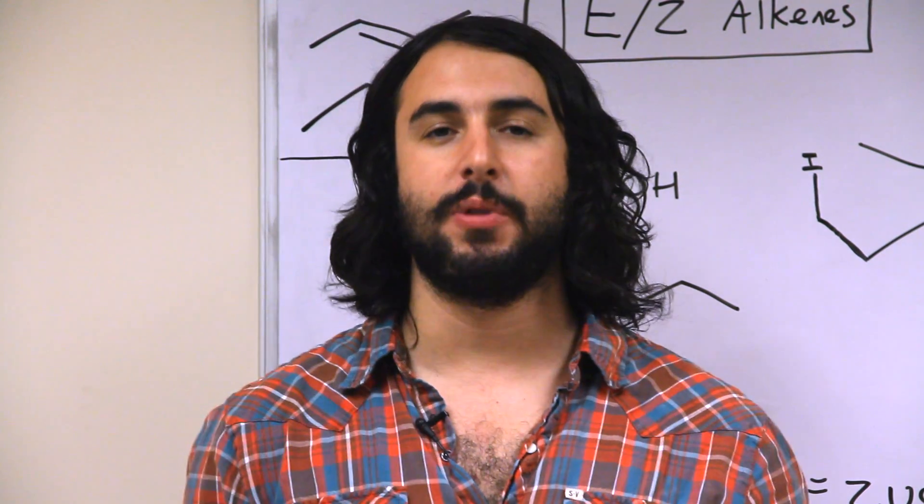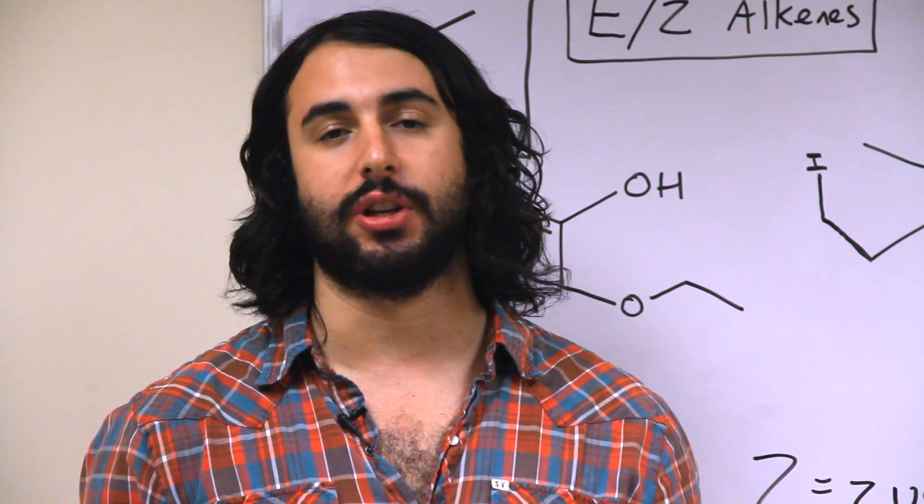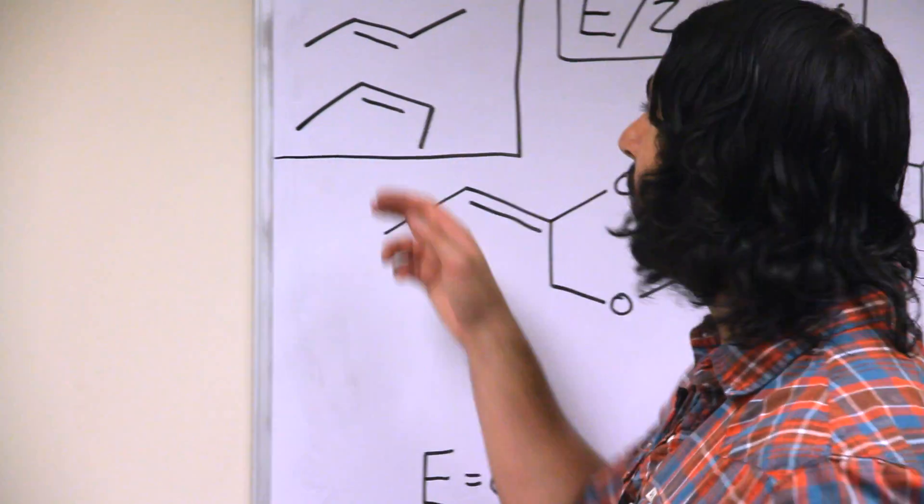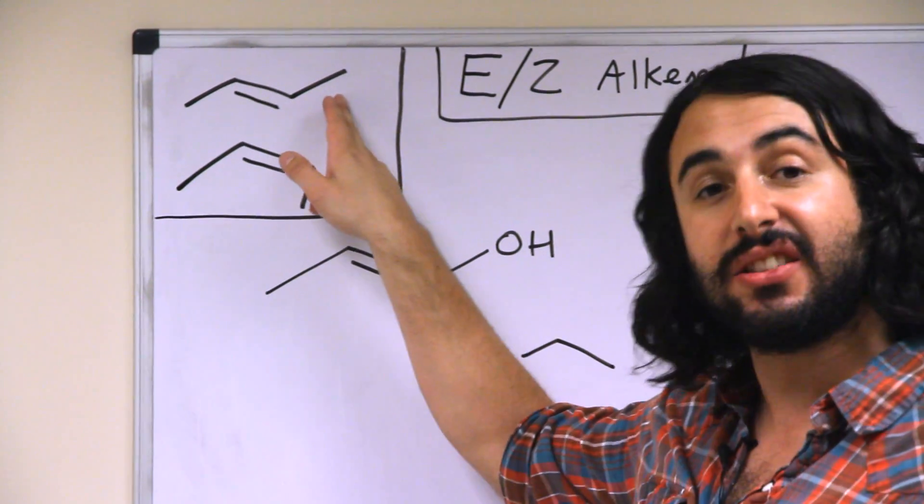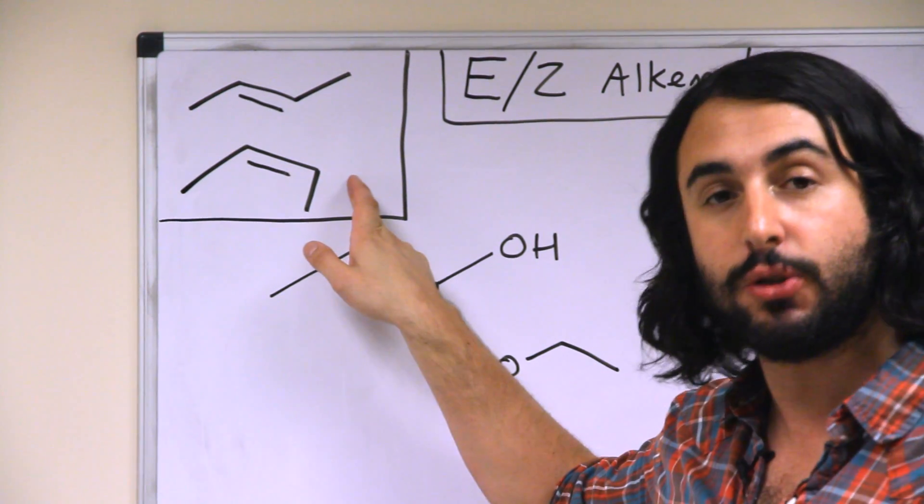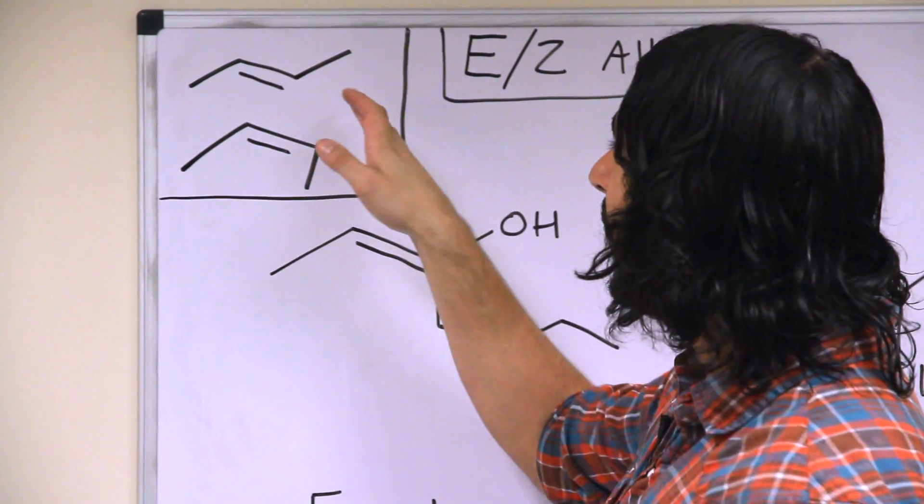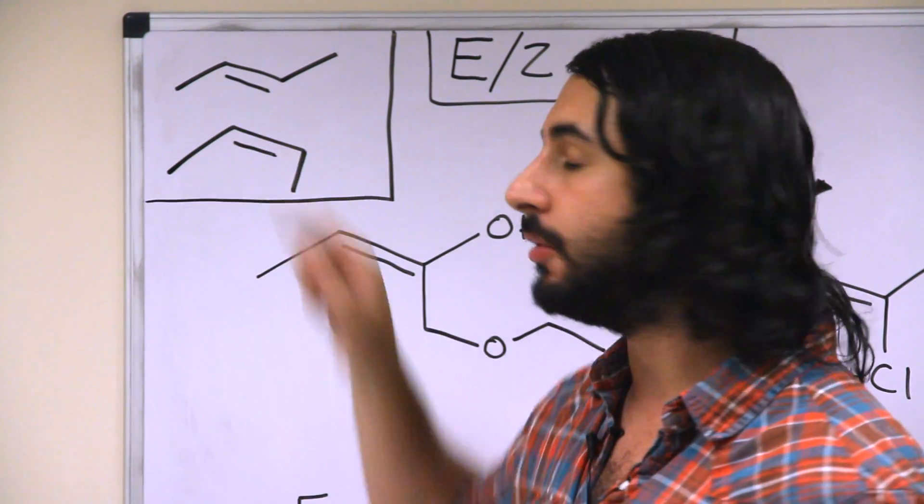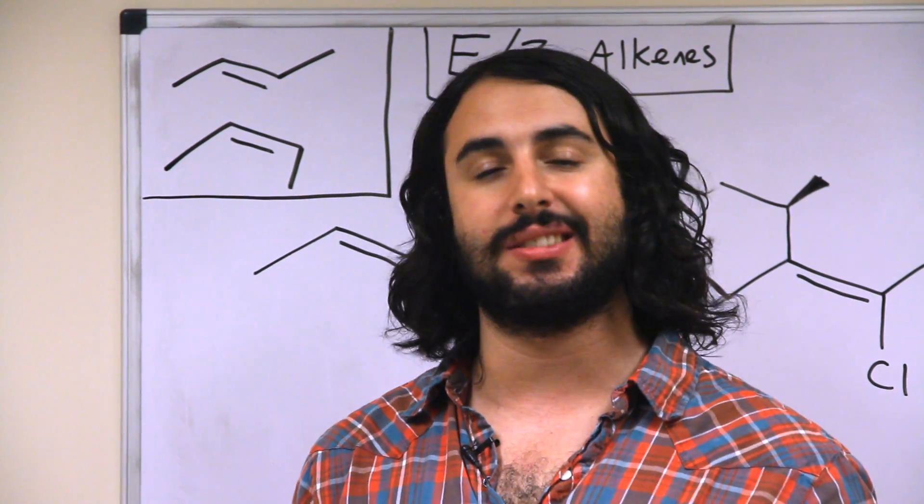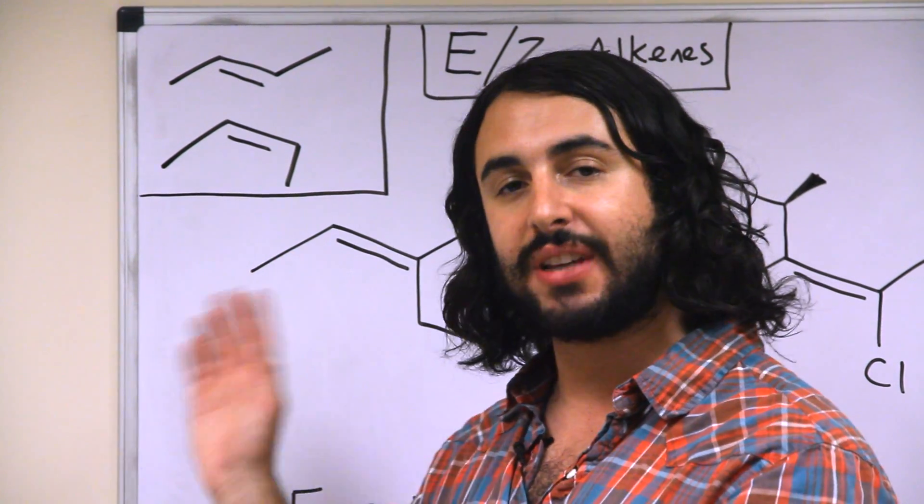So we're probably familiar with cis and trans terminology as it relates to alkenes. For example, we would know that this is a trans-2-butene and this is cis-2-butene. Now we're able to use this terminology because these are only disubstituted alkenes, so there's no ambiguity when we say cis or trans with regards to those alkenes.